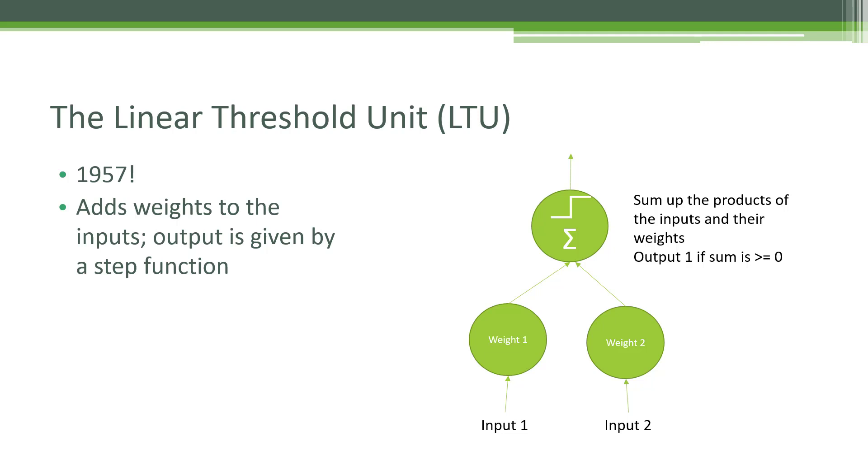We're also going to have the output be given by a step function. Instead of saying we're going to fire if a certain number of inputs are active, there's weights coming in, and those weights could be positive or negative. We'll say if the sum of those weights is greater than zero, we'll fire our neuron off. If it's less than zero, we won't do anything. This is a slight adaptation where we're introducing weights instead of just simple binary on and off switches.